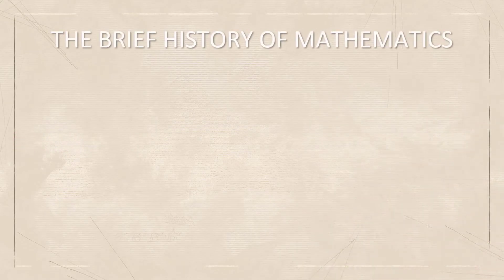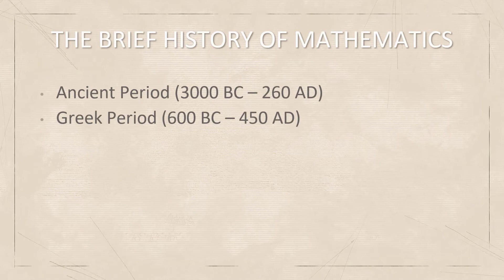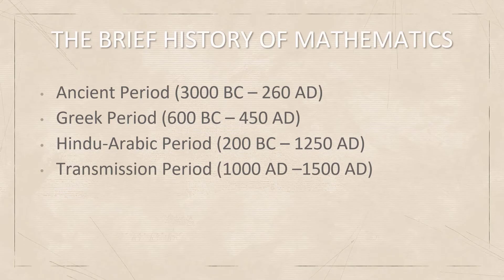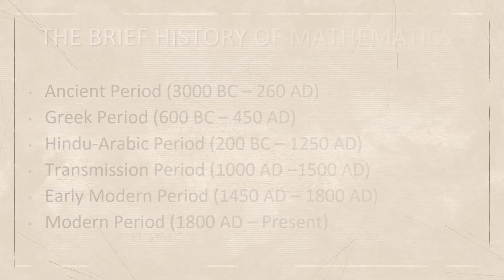The history of mathematics is broadly divided into six different periods: Ancient period, Greek period, Hindu-Arabic period, Transmission period, Early Modern period, and Modern period.